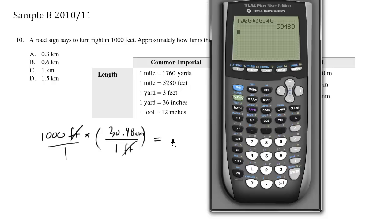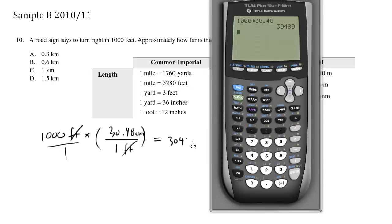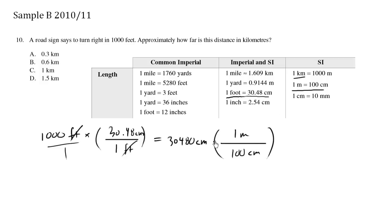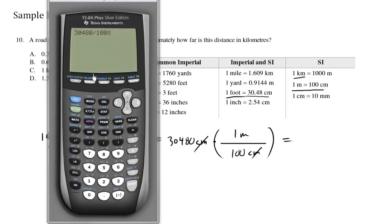We have 30,480 centimeters. Now we want to convert centimeters to kilometers. One meter equals 100 centimeters, so I'll multiply by 100 centimeters over 1 meter, allowing the centimeter units to cancel out and give us meters. That's 30,480 divided by 100, which equals 304.8 meters.